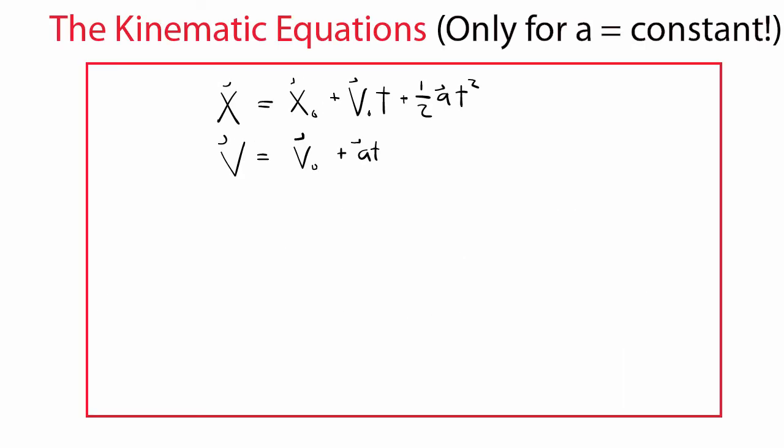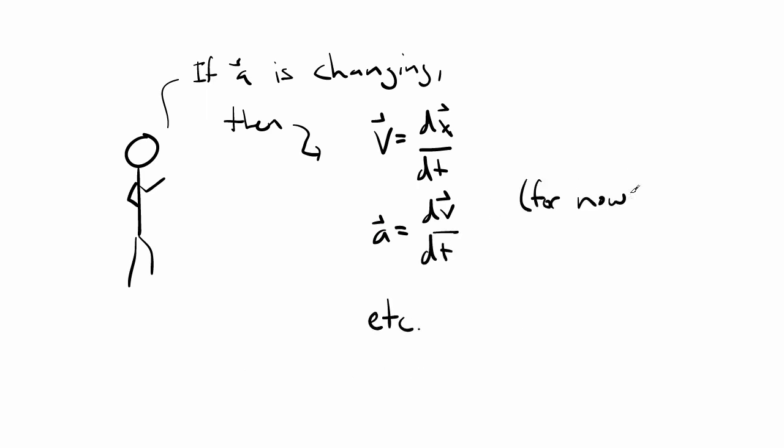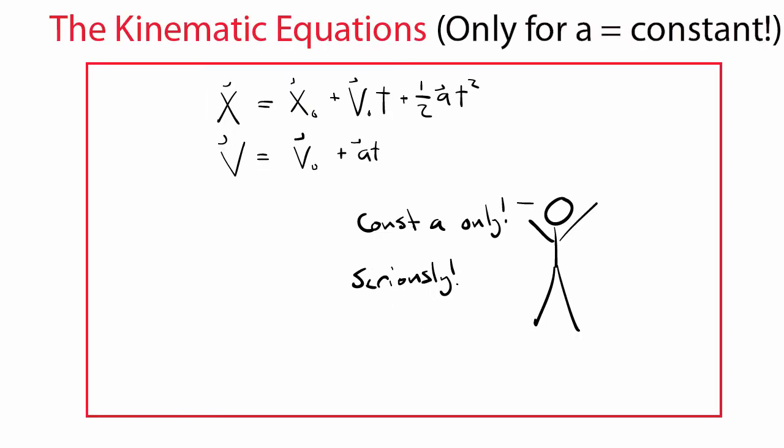These two equations make up part of the system of equations that physicists call the kinematic equations. But it's really important that you understand that they only apply when the acceleration is constant. If the acceleration is changing, then all bets are off, and your only tool to solve for the motion are our original equations involving derivatives. Still, these equations are very useful given how common constant acceleration motion is.